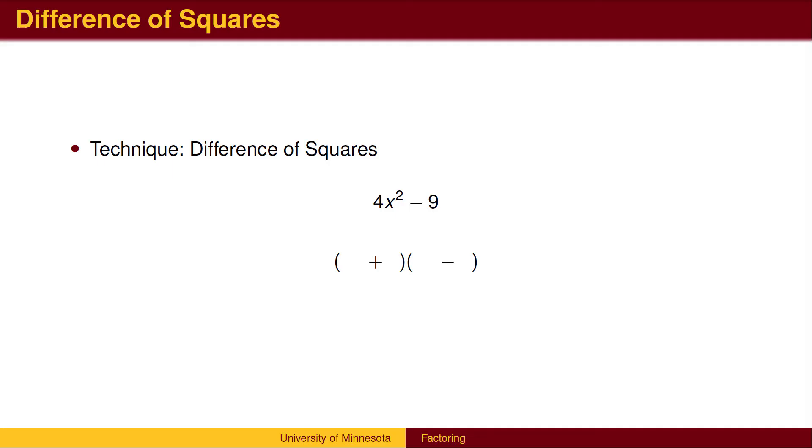All we need to do is to recognize which term gets multiplied by itself to produce the factors. To get 4x squared, we multiply 2x by itself. To get 9, we multiply 3 by itself. If we FOIL the factored expression, the middle terms would cancel.